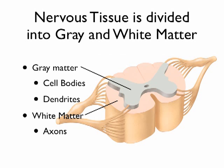The cells themselves extend from gray into white — there's no one cell entirely in the gray or entirely in the white. The neuron itself is in both places: part of it is in the gray matter area and part of it is in the white matter area. So when looking at gray matter and white matter within nerve tissue, this is what we see.